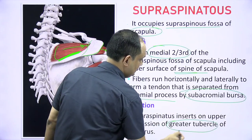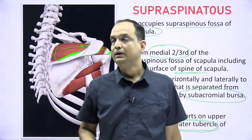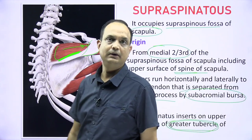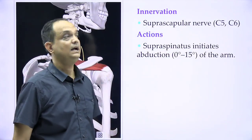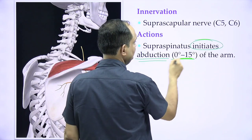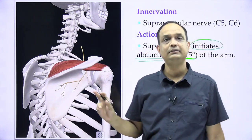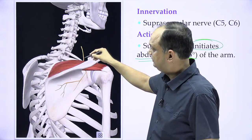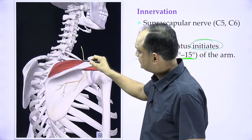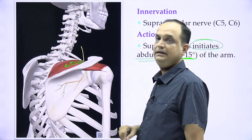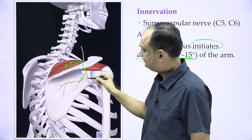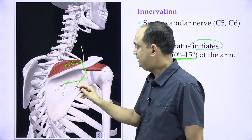Supraspinatus inserts on the uppermost part of the greater tubercle. The greater tubercle is divided into upper, middle, and lower parts. It is supplied by the suprascapular nerve and is responsible for initiation of abduction from 0 to 15 degrees. The suprascapular nerve passes through the suprascapular notch, gives a branch to supraspinatus, then passes through the spinoglenoid notch to supply infraspinatus.